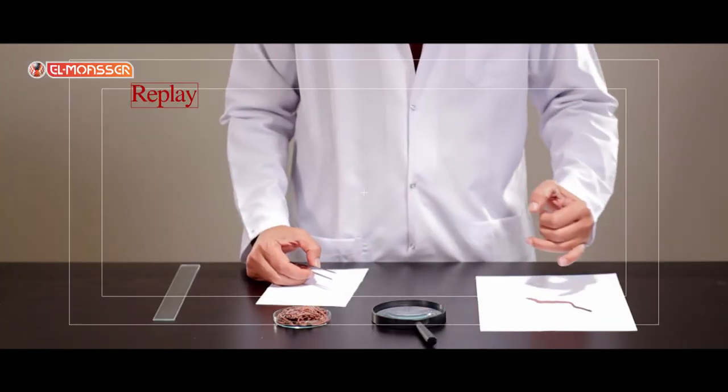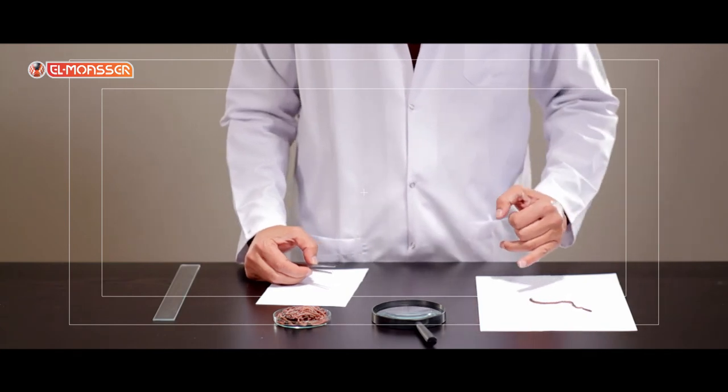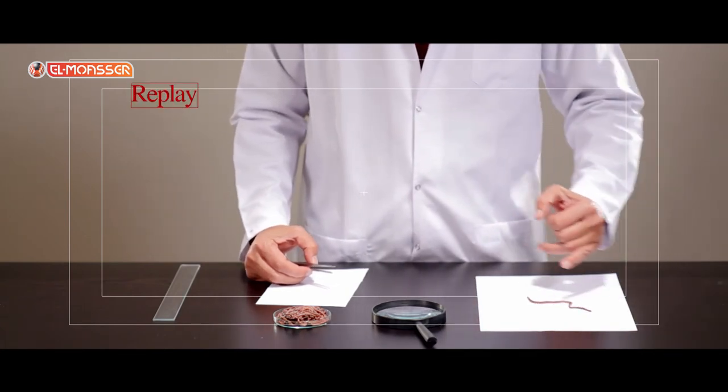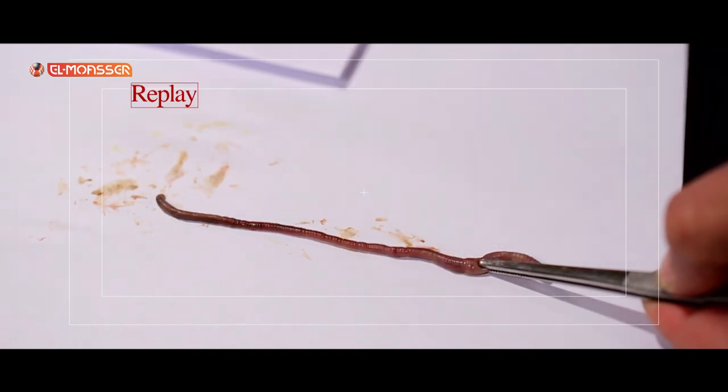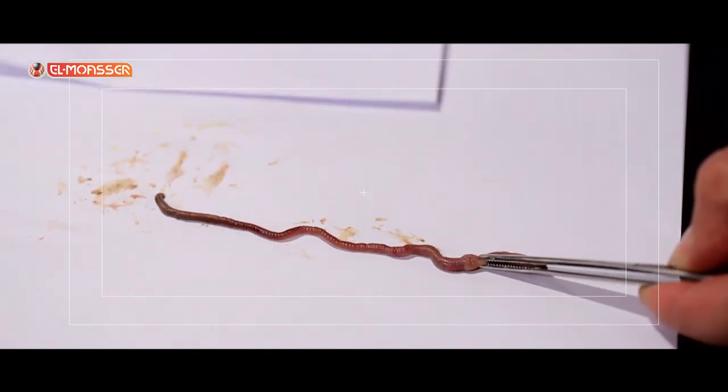Conclusion: The earthworms are classified according to, first, the division of its body into rings, and second, the setae which are buried in each segment of the ventral surface.